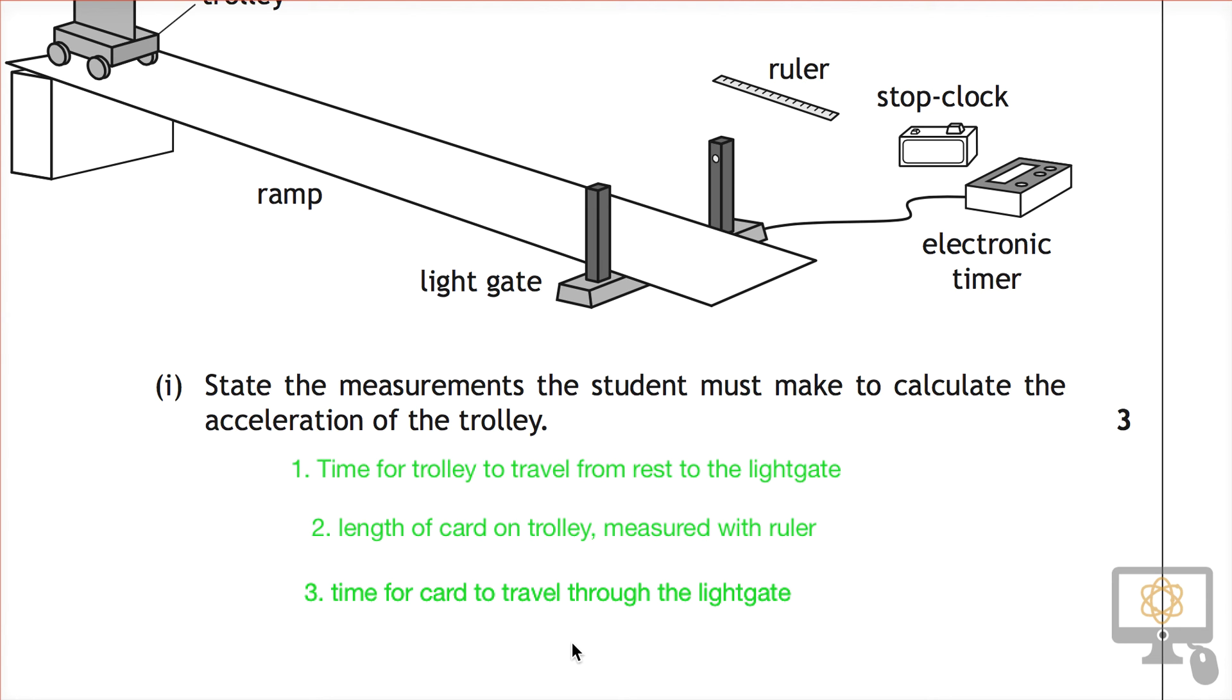And finally, you wouldn't also be able to write the time for the trolley to travel through the light gate, because it's actually the card that's traveling through the light gate that's measuring the time. So a number of things there just to bear in mind when you're writing these three statements to be precise about what you're actually measuring.